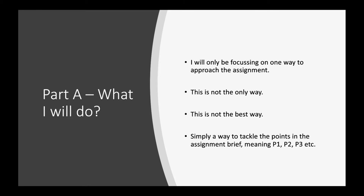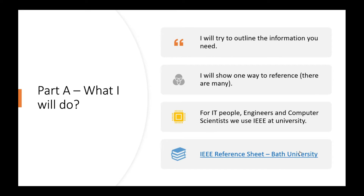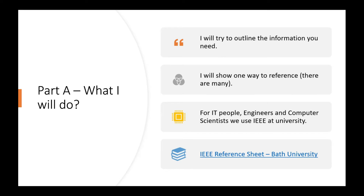What I'm going to be doing again and again is going back to the grading criteria and showing one way to tackle whatever the marking criteria requires. I'll try to outline the information you need. For referencing, I'll show one way — engineers and computer scientists use what is called IEEE referencing at university. I'll put a link in the description, but I'm also going to show a really easy way using a reference generator website where you just paste your link and it generates a reference for you.